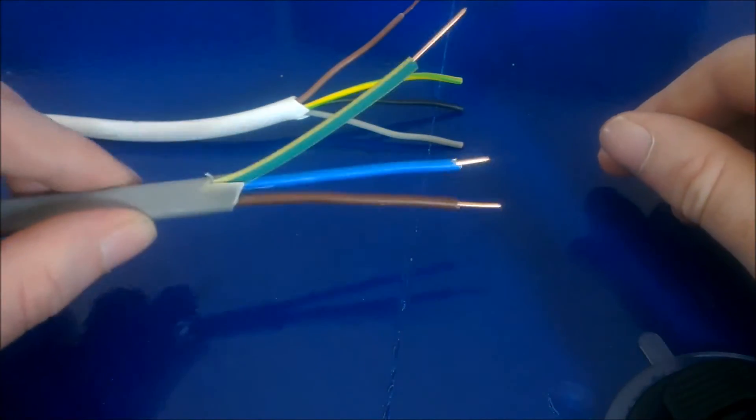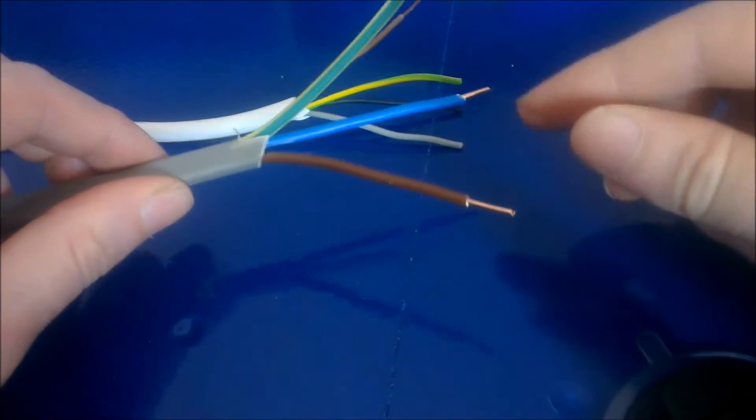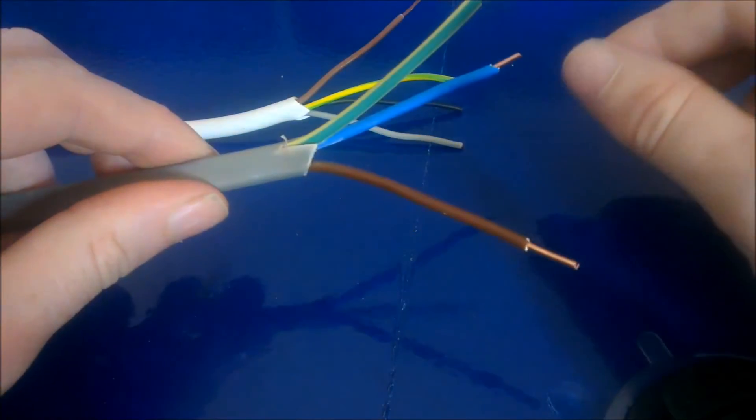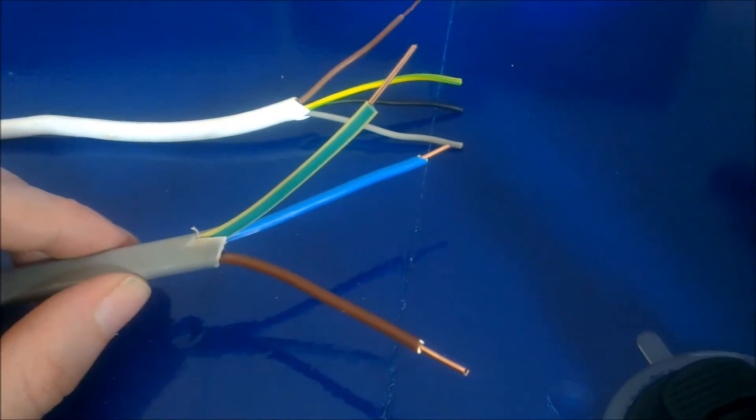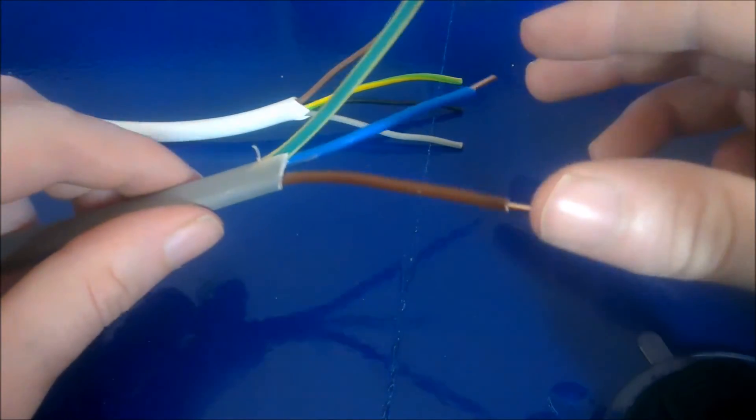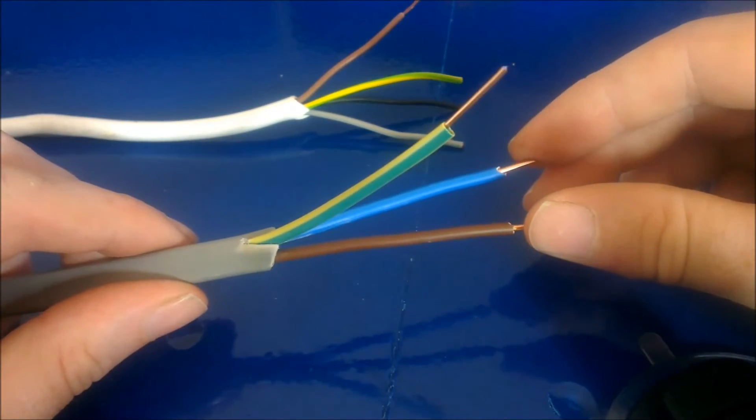So you have two lives in your MCB and your two neutrals will be in your neutral bar, two earths in your earth bar. So a standard ring will come in 2.5mm twin and earth and a 32 amp MCB.